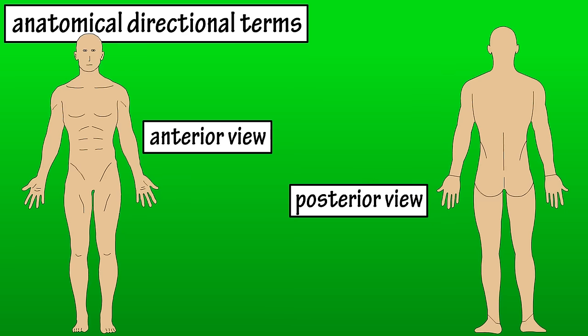Anterior and posterior can also be used to describe how you're looking at the body. While the body will always be referenced from the anatomical position, it can be viewed from an anterior view, meaning looking at the body from the front, and it can also be viewed from the posterior view, meaning looking at it from the back.